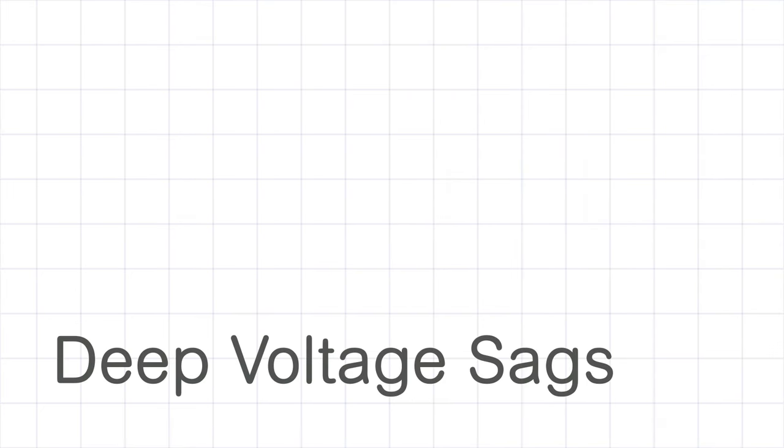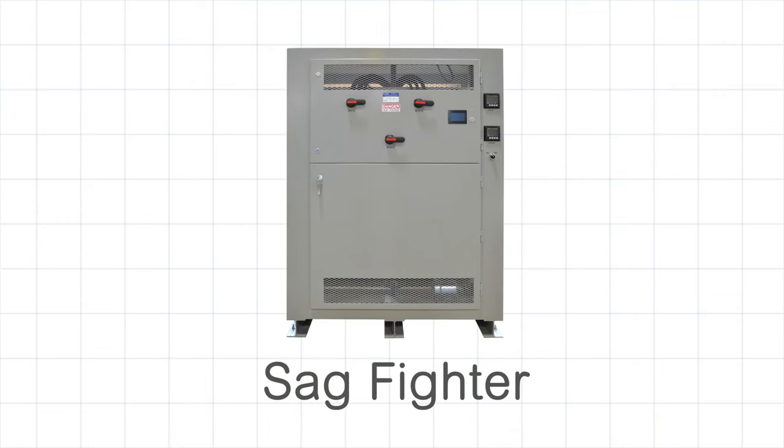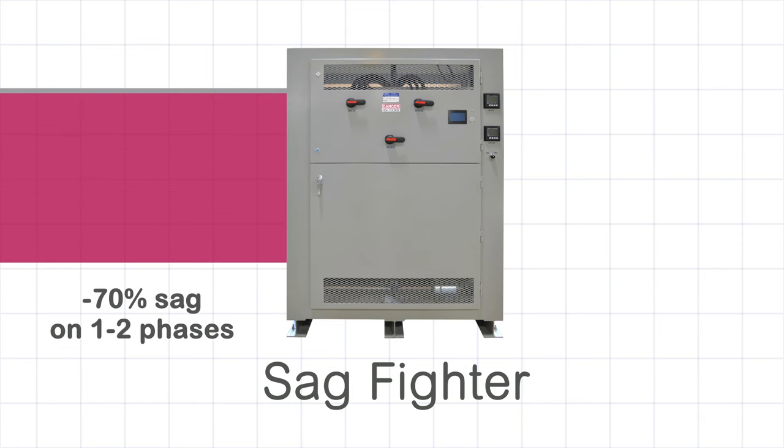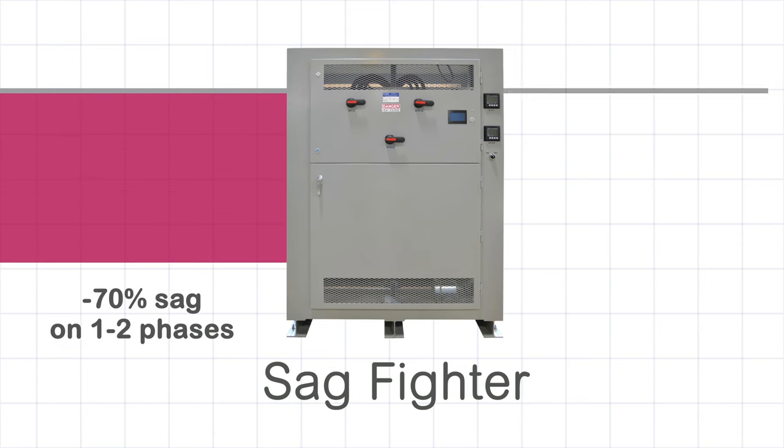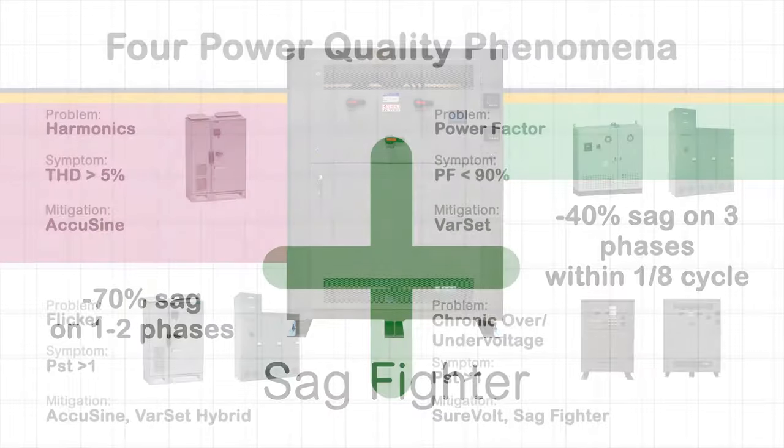Deeper voltage sag are normally caused by short circuit events and or by operation of a utility recloser. For these deep sag events, the sag fighter is the solution. It can correct for 70% sag on one or two phases or for 40% sag on three phases within one eighth cycle and boost the voltage back to 95% of nominal value.